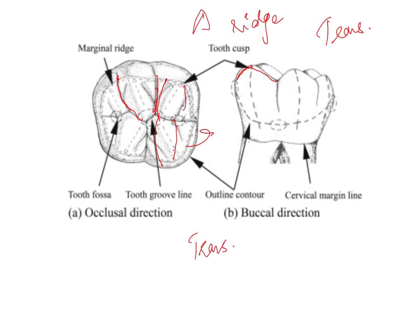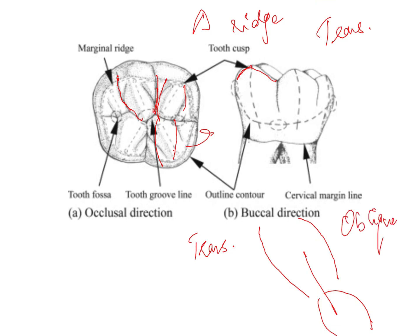A feature present only in the maxillary molars is a ridge from the mesiolingual cusp extending to the distobuccal cusp, and this ridge is called an oblique ridge. So all of these - cusps, triangular ridges, transverse ridges, and the oblique ridge - are elevations.